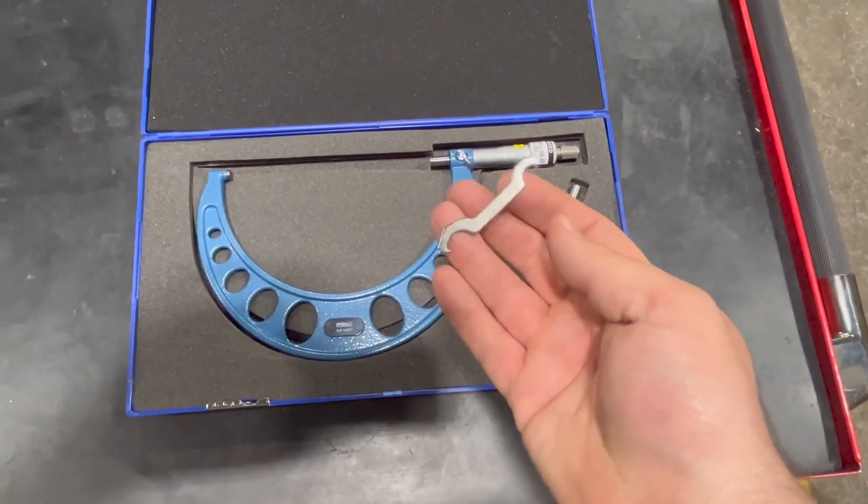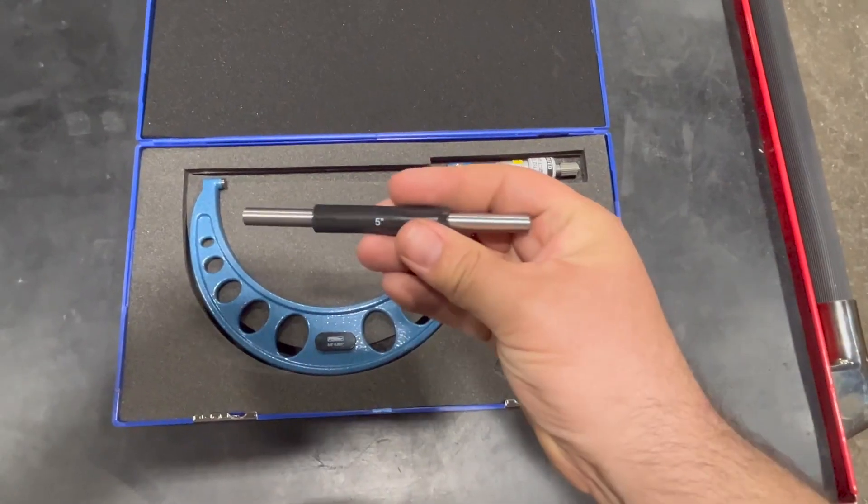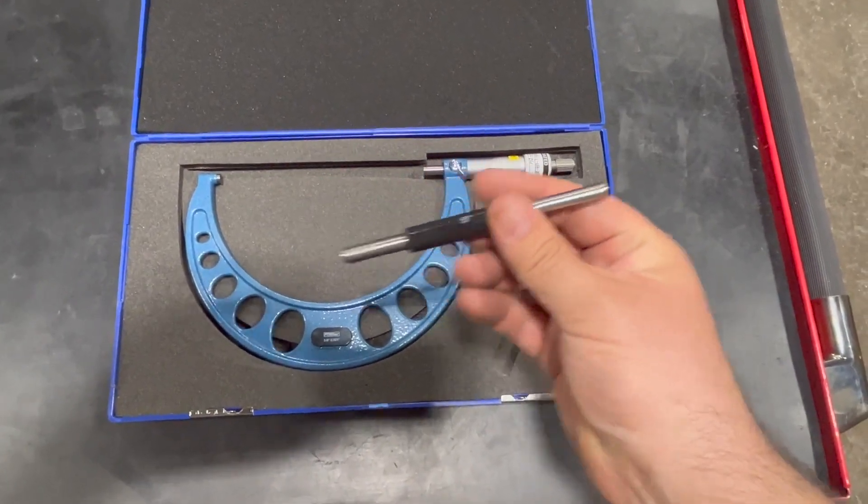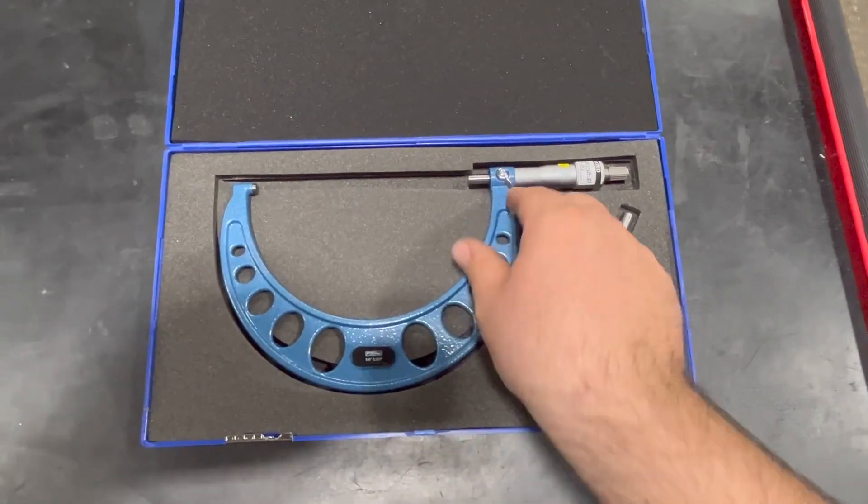It comes with a barrel adjustment tool and then it has the five inch standard that you can check it to, and then the micrometer itself is right here.